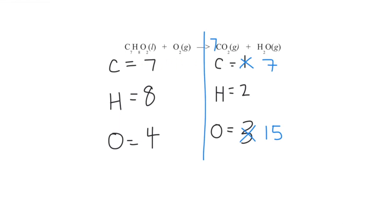Going back to the top: seven carbons — good. Now hydrogen: I have eight on the left and two on the right, so I need to get the right side up to eight. I can change the coefficient on the water from one to four. That multiplies everything by four: four times two gives me eight hydrogens, so I update that to eight. But it also affects the oxygen — four times one gives me four oxygens from water, plus the 14 from carbon dioxide, so now I have 18 oxygens on the right.